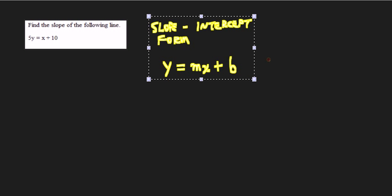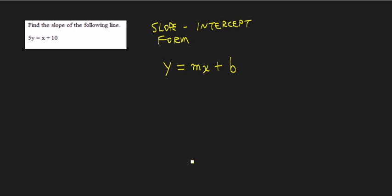The trick to doing this one is to remember the slope-intercept form of a line, and that is y equals mx plus b.